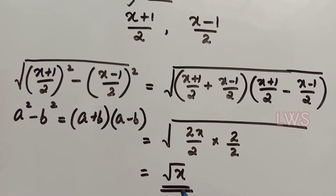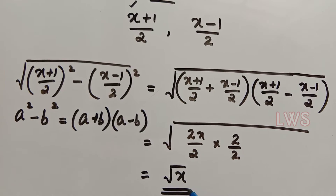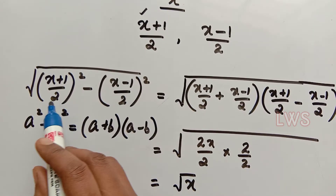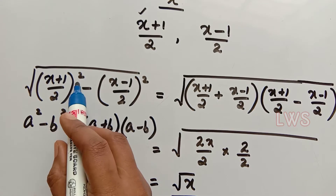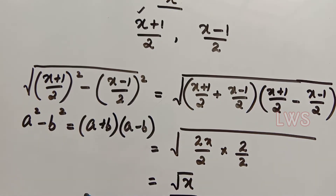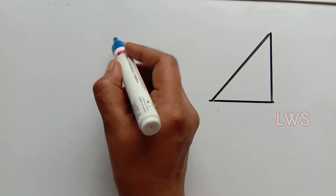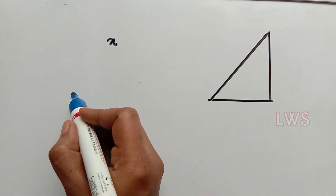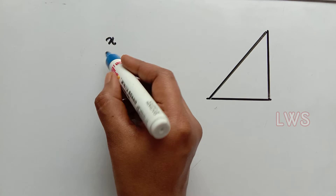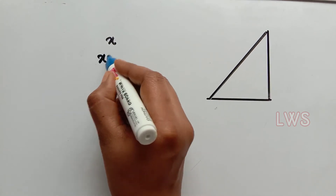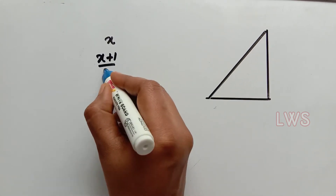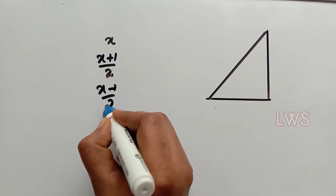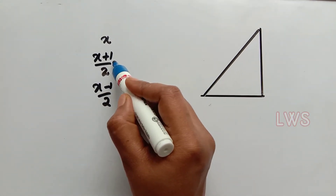From this, it is clear that any real number x can be represented as the difference of squares of (x plus 1 by 2) and (x minus 1 by 2). Now coming to the construction: let x be the real number for which we have to represent root x on the number line. To represent root x, we need only two numbers, i.e. x plus 1 by 2 and x minus 1 by 2.